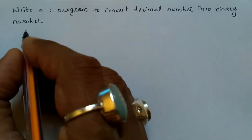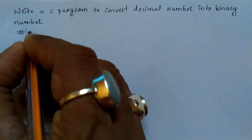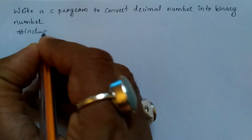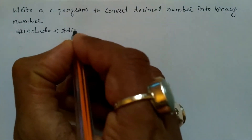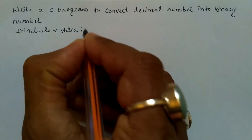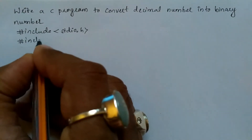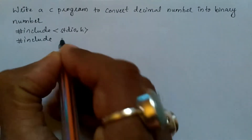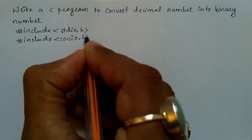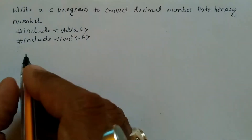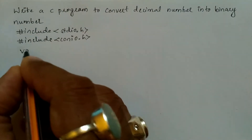Let us write the preprocessor directives: #include in angle brackets we write stdio.h header file. Next preprocessor directive: #include in angle brackets we write conio.h header file.